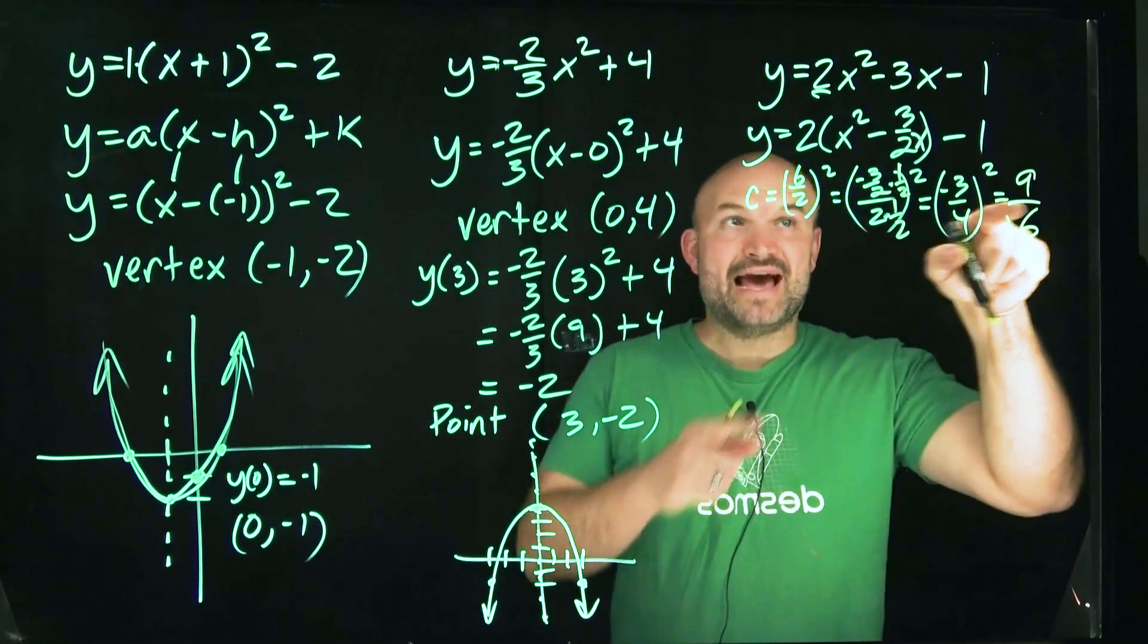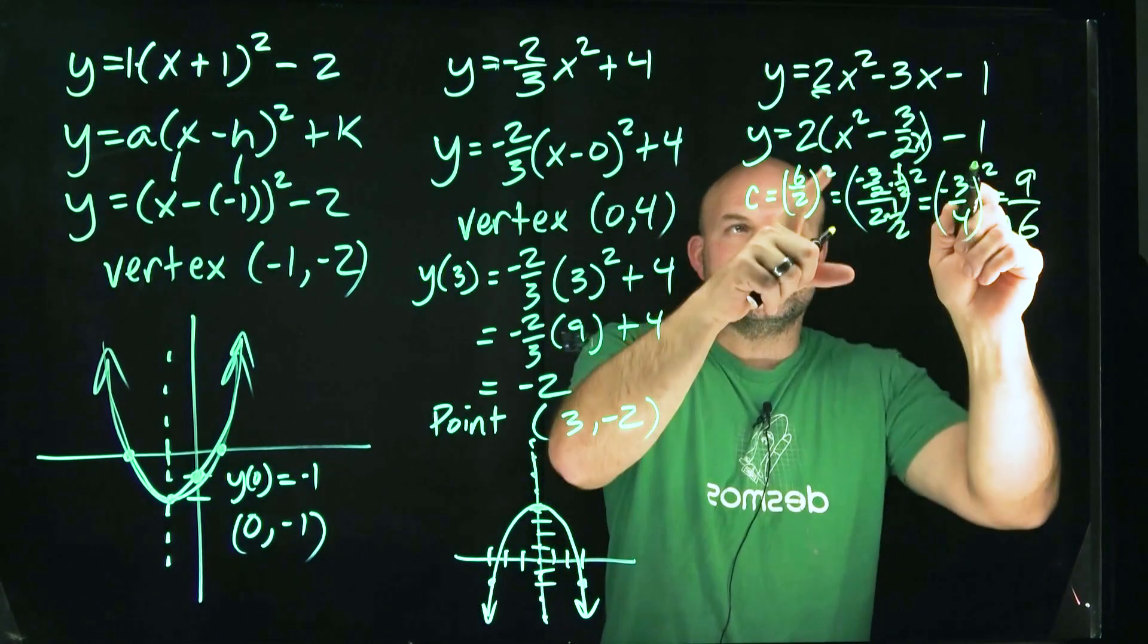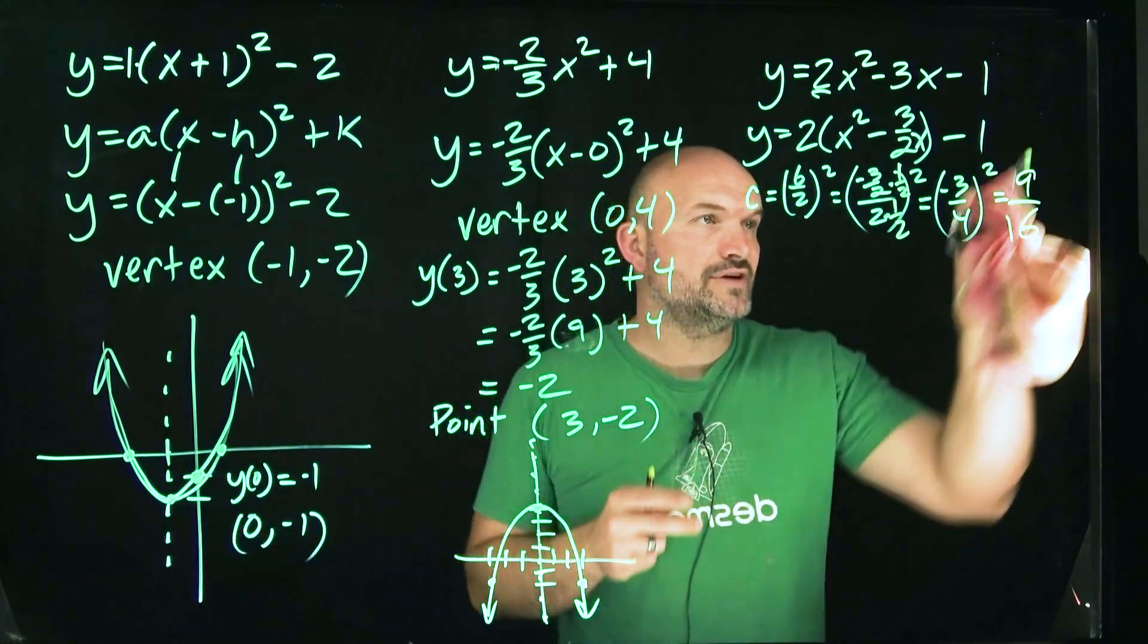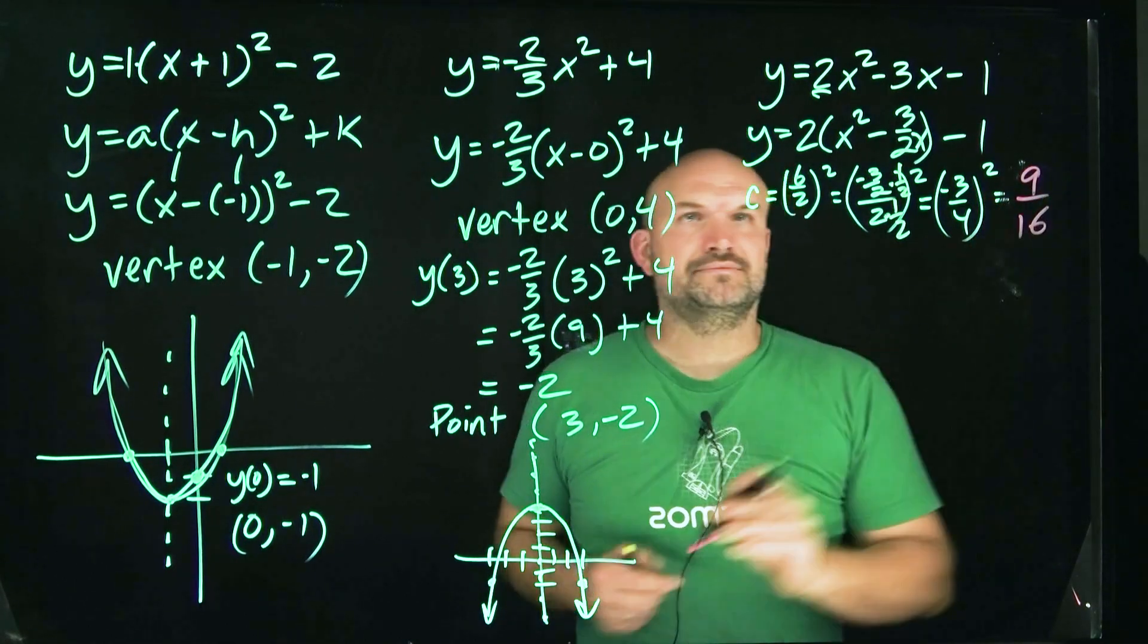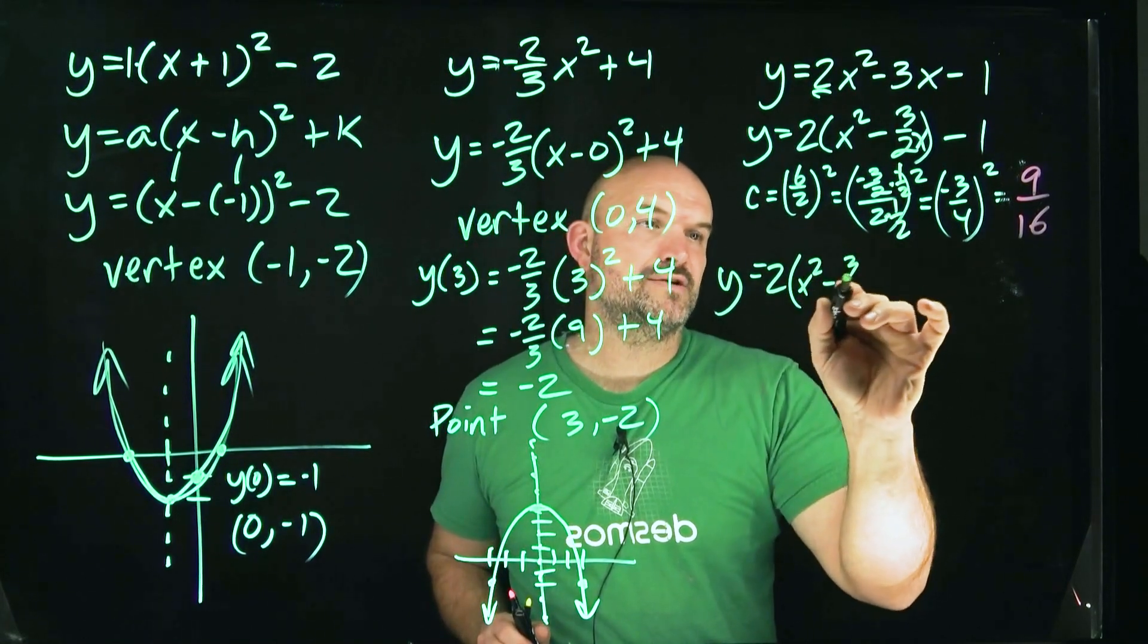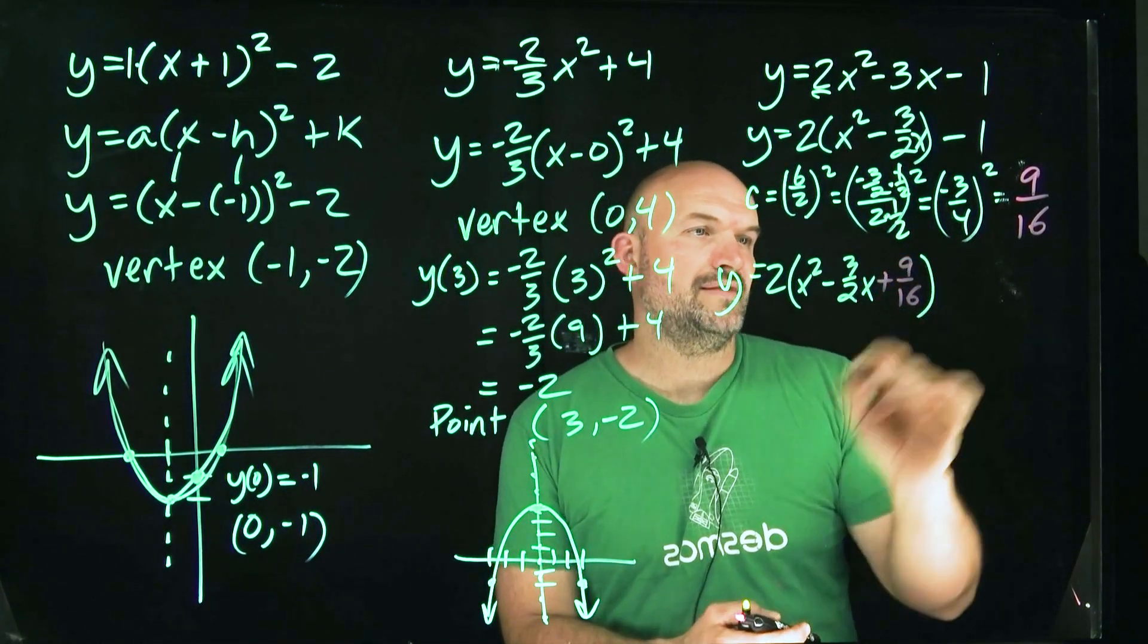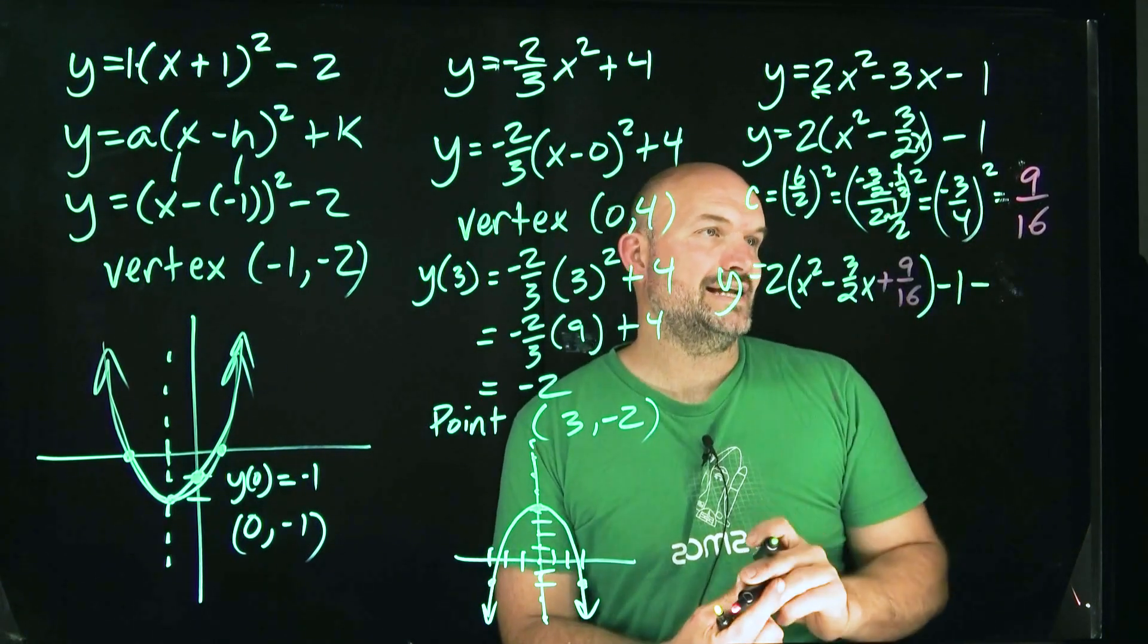So what I'm going to do is add that value inside the parentheses, but I'm also going to subtract it outside. Because whatever you do on one side, you have to do it on the other side, or you can add and subtract on the same side. So I'm actually going to draw this in a different color. So therefore you can see what I did here. So that is going to be 9 over 16. So now I'm going to have y equals 2 times x squared minus 3 halves x, and that's going to be plus 9 over 16.